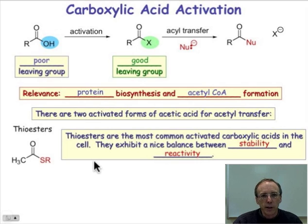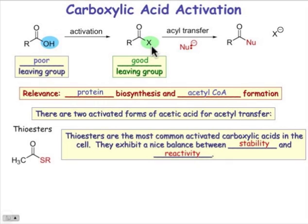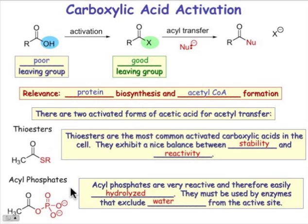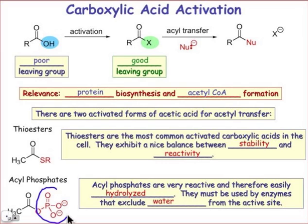There are two ways by which nature activates the carboxylic acid group. The X group could be, for example, the thiol group — giving us a thiol ester. Notice it looks just like an ester except sulfur has replaced oxygen. These are a nice balance between being relatively stable — they can exist in the cell's aqueous environment without hydrolyzing very quickly — yet they have enough reactivity to do additional chemistry. The second way is the mixed anhydride form, an acyl phosphate. These are quite reactive and easily hydrolyzed by water, so this chemistry must take place in the interior of a protein's enzyme active site, where water is excluded.